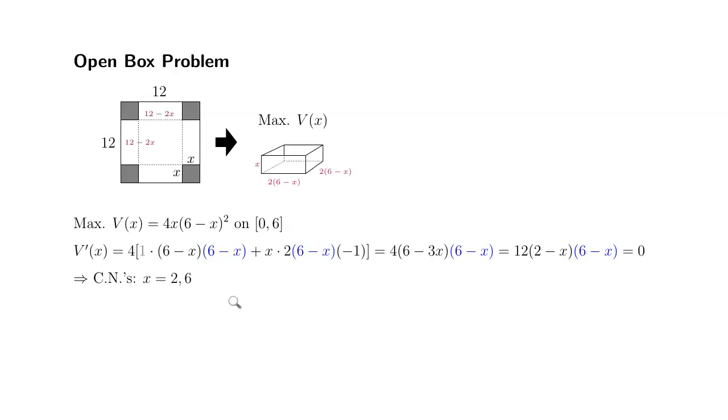Alright, so using the closed interval method, there are only, in this case, three possible places where you can have the maximum volume. Left endpoint, or critical number 2, and right endpoint, which happens to be another critical number 6. So we're going to evaluate the original volume function at 0, 2, and 6.